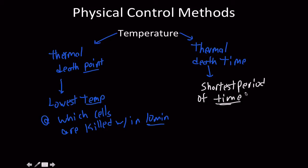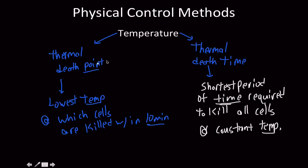So the thermal death time, I'm going to switch colors to white for that. This is the shortest period of time required. So what are we talking about here? Here, the variable which has changed is time, as opposed to here, the variable which we were working with is temperature, and time was kept constant. So the shortest period of time required to kill all cells at a constant temperature.